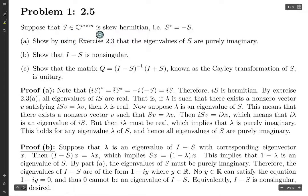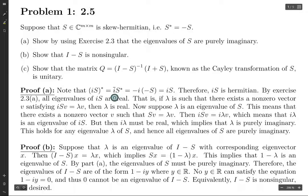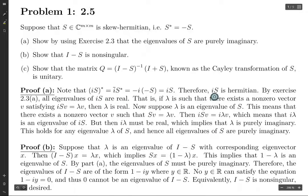We say that a matrix is skew-Hermitian if S* equals negative S — so it's like Hermitian but with a negative sign. We want to use exercise 2.3 to show that any skew-Hermitian matrix has purely imaginary eigenvalues. Note that if you take the conjugate transpose of IS, you can pull the scalar outside. The complex conjugate of i is negative i, and the conjugate transpose of S is negative S. So we end up with negative i times negative S, which is positive IS, meaning IS is Hermitian.